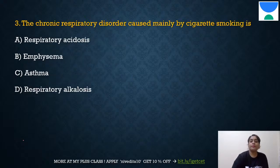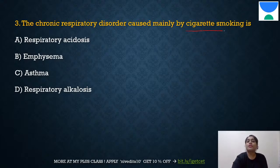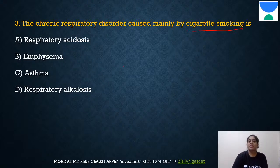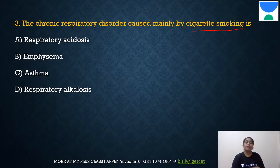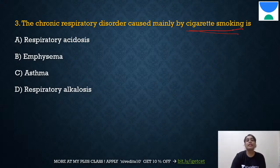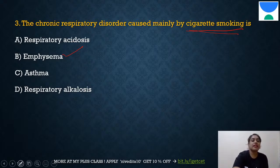Question 3: The chronic respiratory disorder commonly caused by cigarette smoking — the answer is B: emphysema. Acidosis and alkalosis refer to the blood becoming extremely acidic or alkaline, which is different. Emphysema was already established as the cigarette smoking-related disorder in the previous slide.